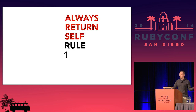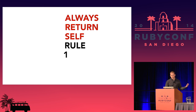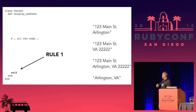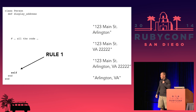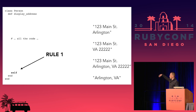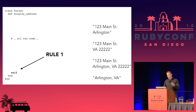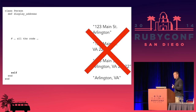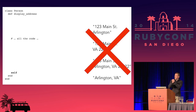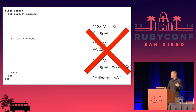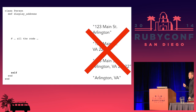So let's start following the rules. Rule number one: always return self. Here's what it might look like — down at the bottom, self. All of our algorithm for displaying is still there, but we follow the rule. What happens? It's broken. So this is an indication that if we follow this rule, maybe there's something missing — maybe there's another object that we need.